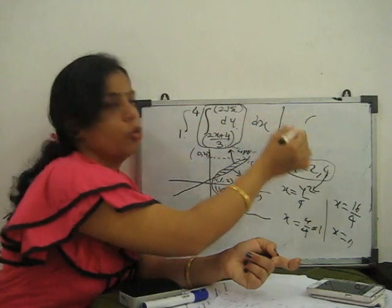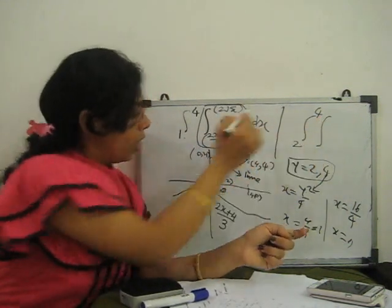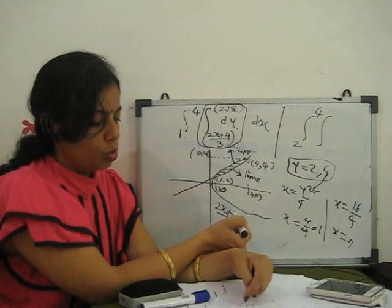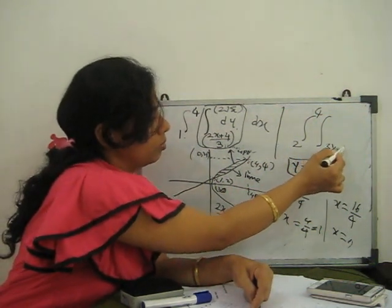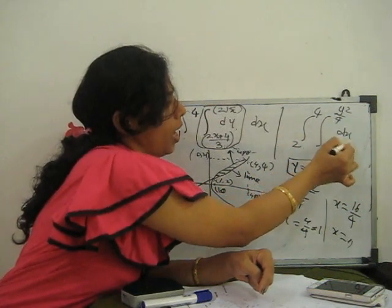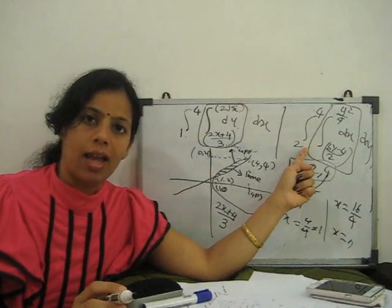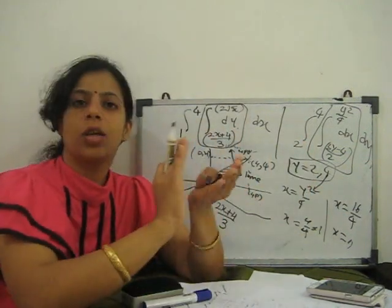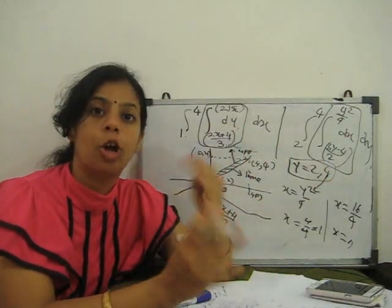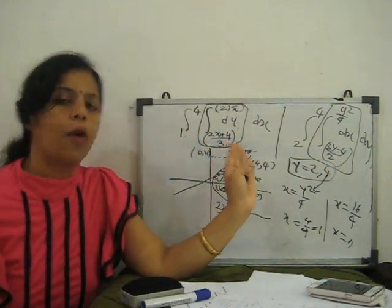Similarly, we can set up the integral with y as the outer variable — y going from 2 to 4. The lower limit for x comes from the line: x = (3y − 4)/2, and the upper limit from the parabola: x = y²/4. So the area is the double integral from y = 2 to 4, and x from (3y−4)/2 to y²/4, of dx dy — integrating first with respect to x, then with respect to y. This is also an example of change of order of integration. Both integrals give the same result, because the area value cannot change.